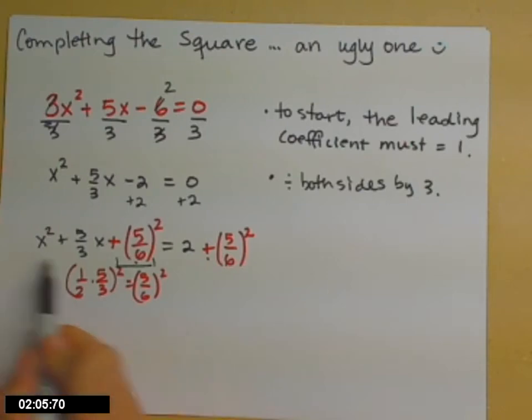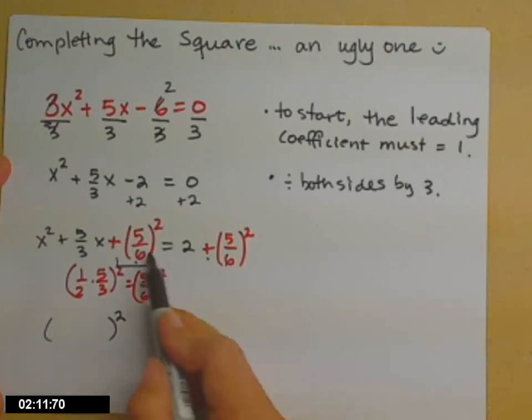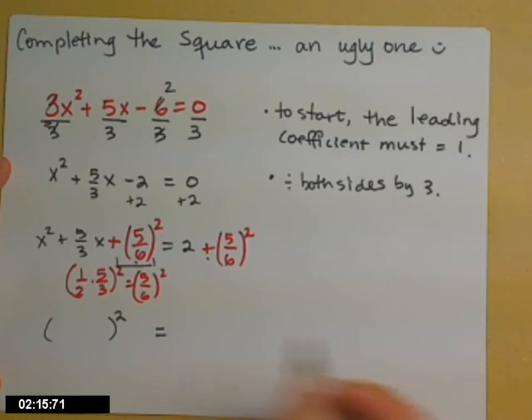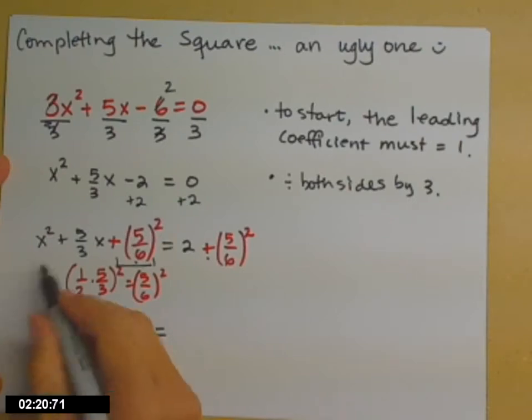Now the left side factors so that's what we need to do and it's going to factor into a binomial squared. That's why we chose that special number to go in to my constant term. x in the first spot, that leading coefficient had to be 1, the sign of the linear term.